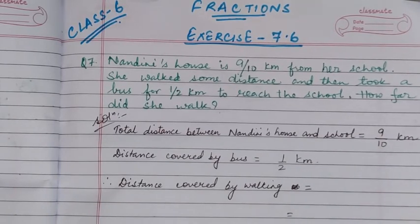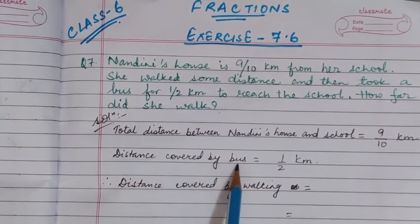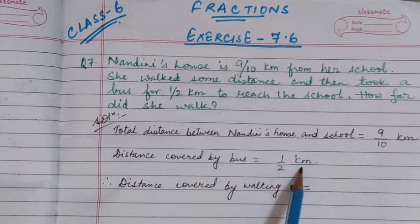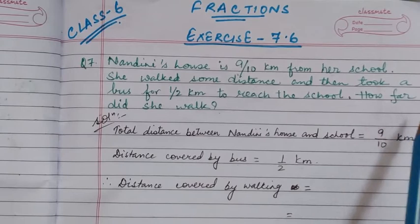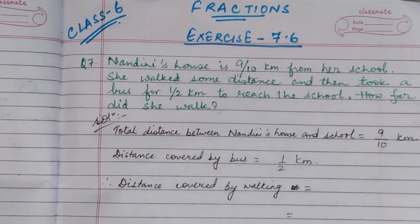The question says she walked some distance and then took a bus for half km. So you will write: distance covered by bus is equal to 1/2 km. Now we have to find how far did she walk — that is, the distance covered by Nandini by walking.